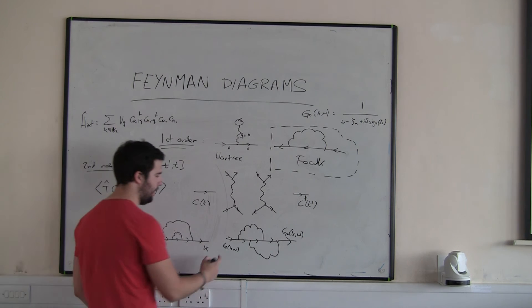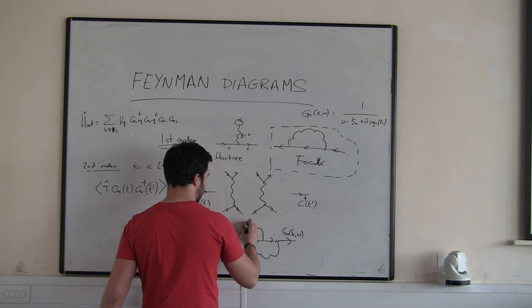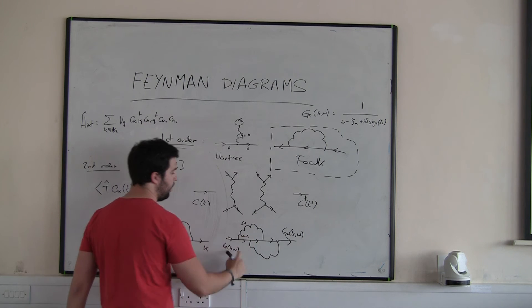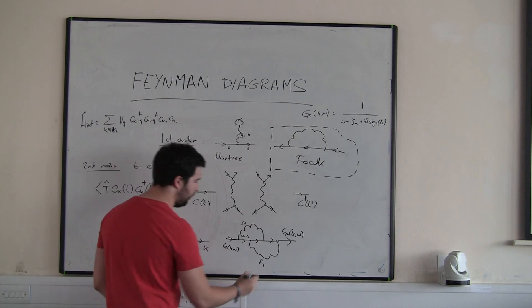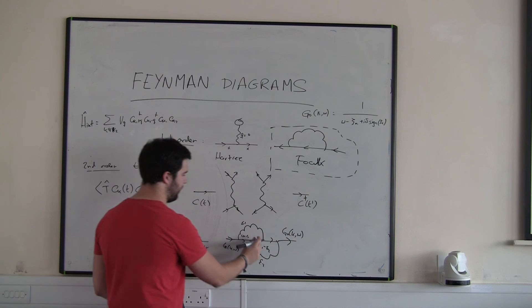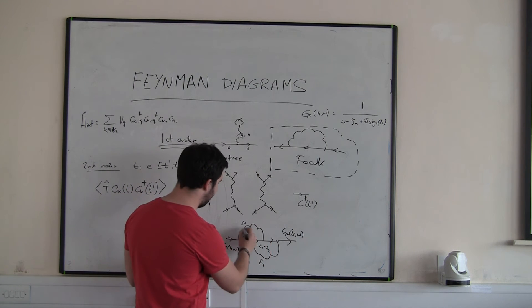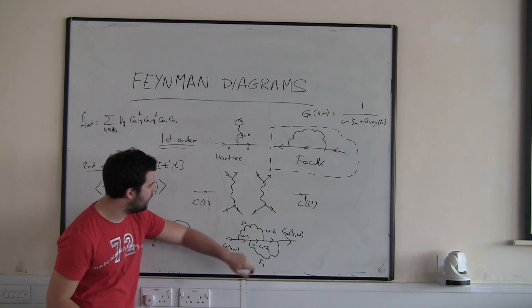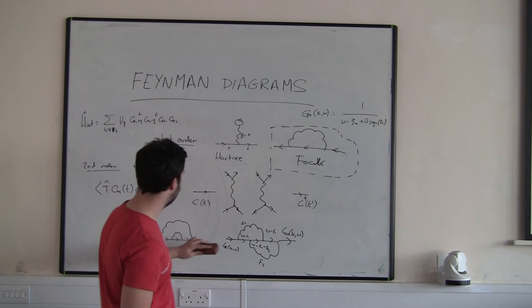If this line here carries energy epsilon_1, then this line has to carry energy omega minus epsilon_1, because energy has come this way. This line carries energy epsilon_2, so the middle line has to be omega minus epsilon_1 minus epsilon_2. However, when I come back, I recover epsilon_1, giving omega minus epsilon_1. And when I come back again, I recover epsilon_2, so I end up with the same energy omega. That's one way of looking at it.